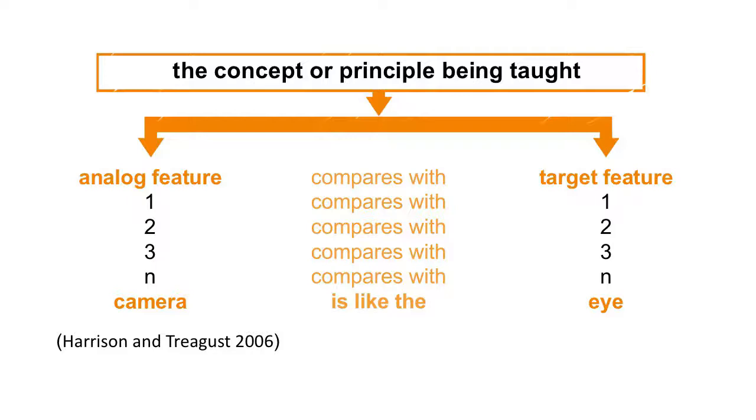What is an analogy doing? An analogy is nothing else than comparing features from two worlds. It compares features from the source domain, an experience-based source domain, with an abstract target domain. So you compare something from everyday life with a science topic.